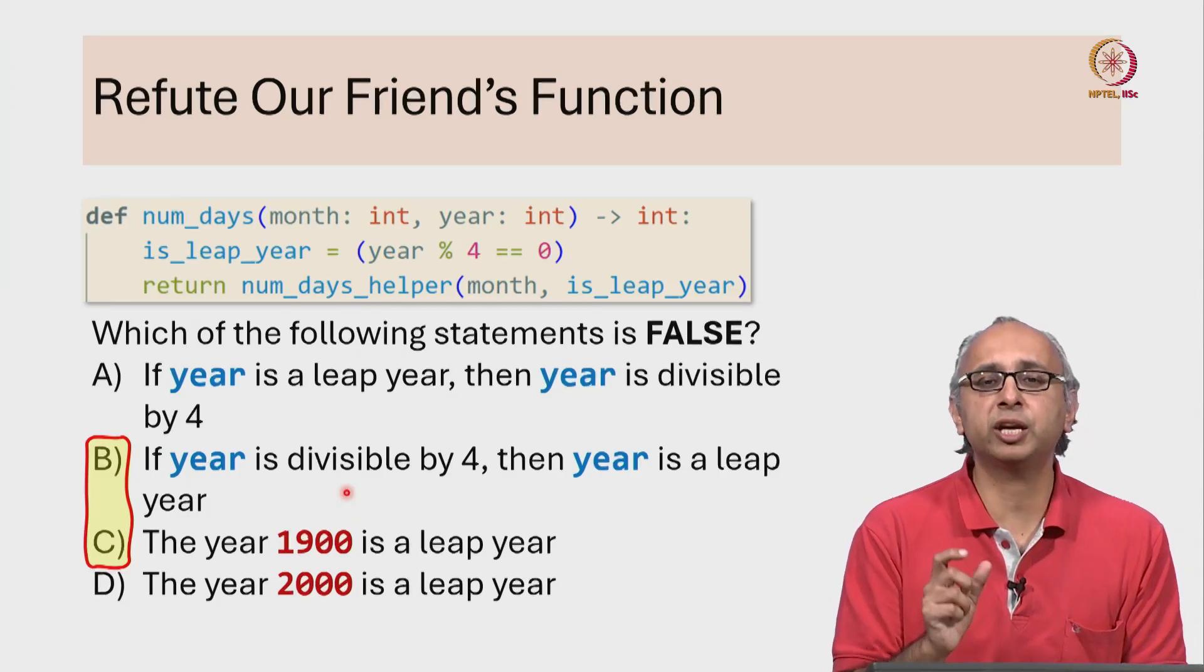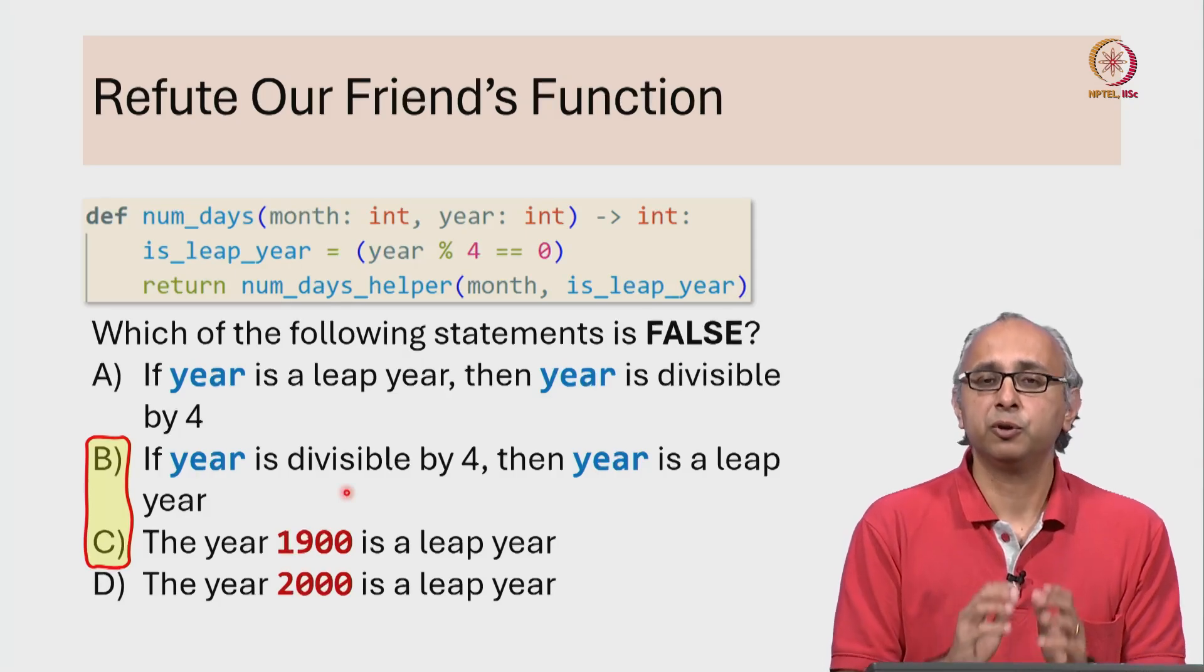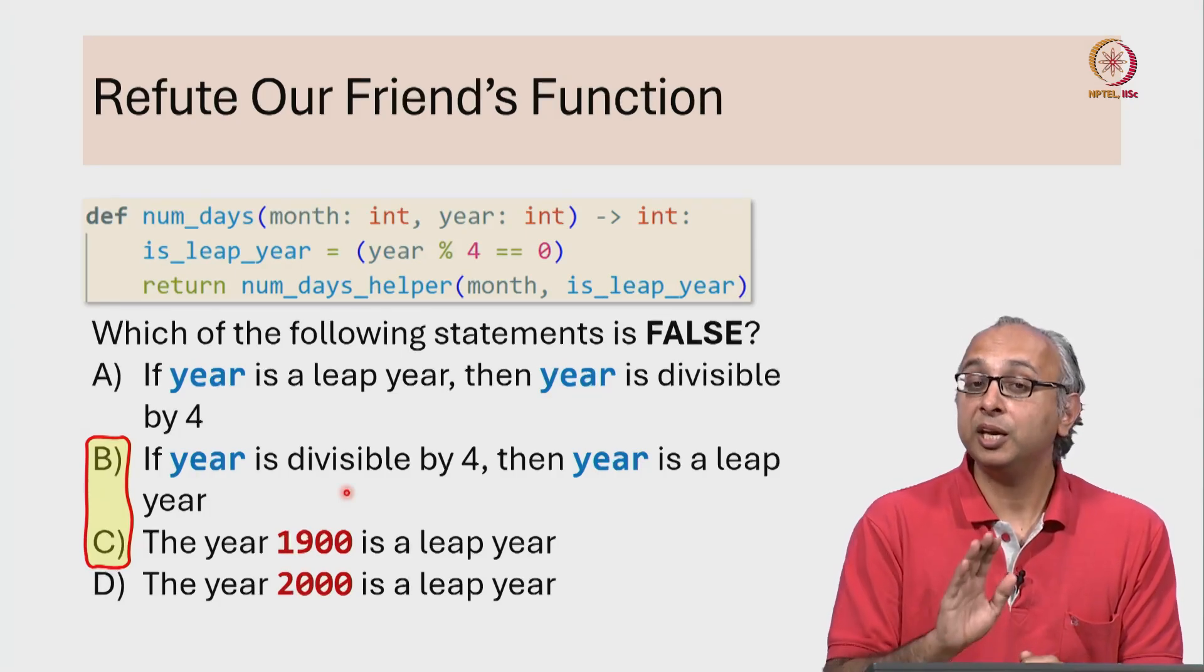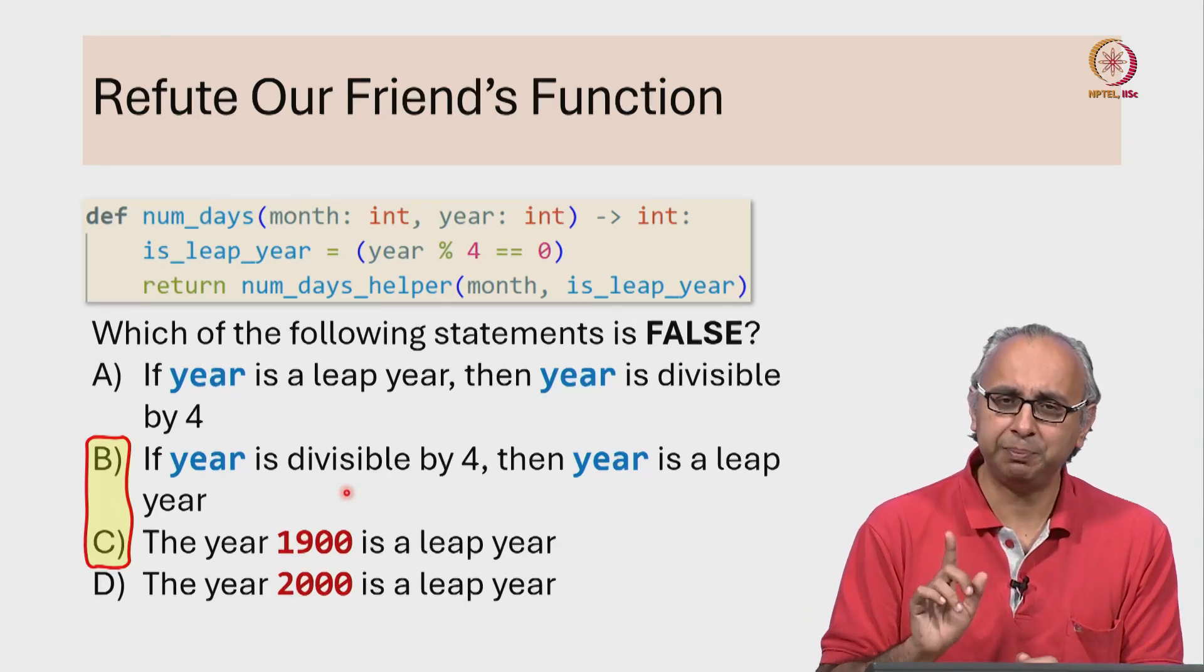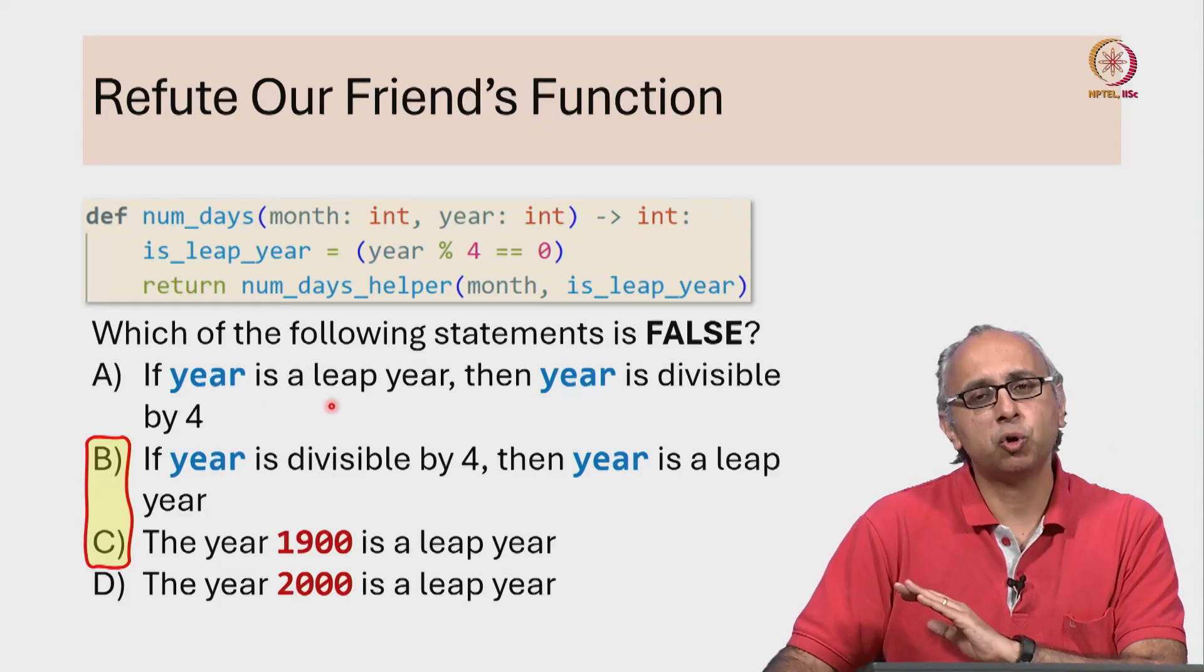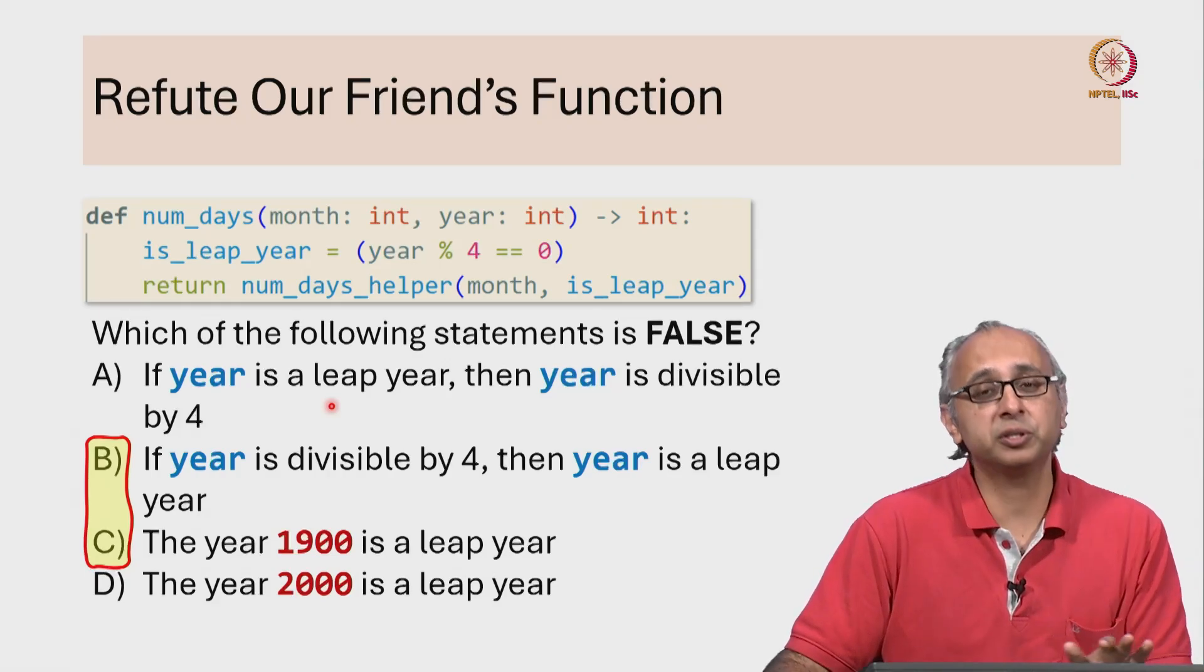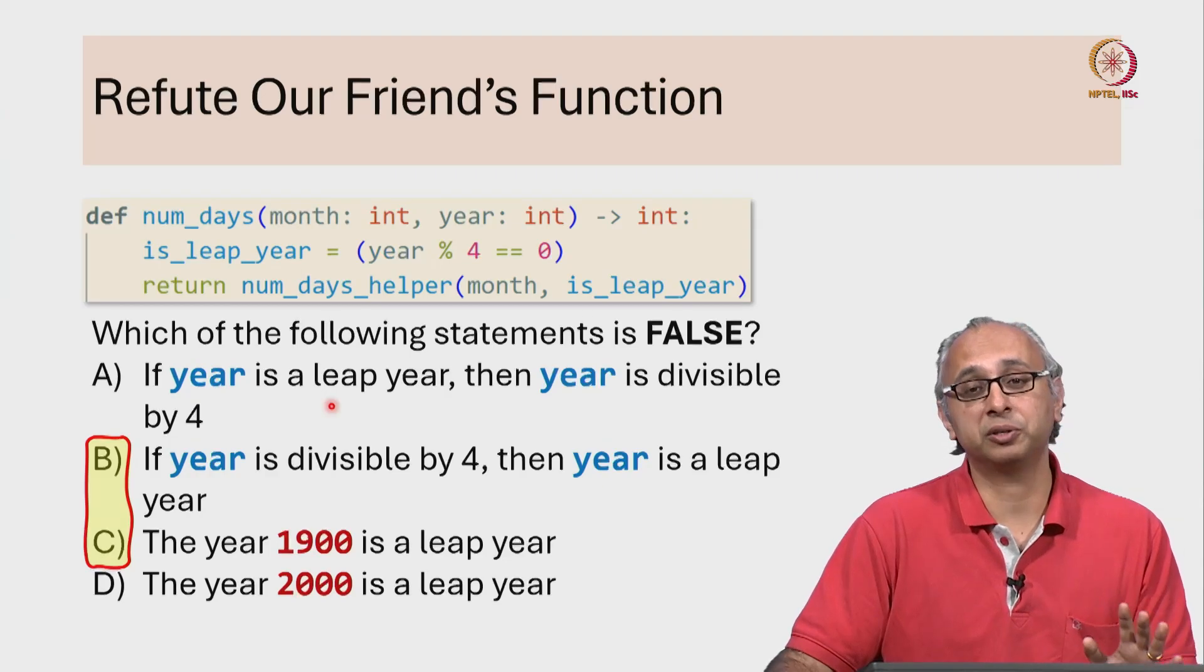So the condition to check if a year is a leap year or not is something like this. Firstly, check if it is divisible by 4. If it's not divisible by 4, then definitely it is not a leap year because if it is a leap year, it must be divisible by 4. So all years like 2025 that are not divisible by 4, those years are definitely not leap years.